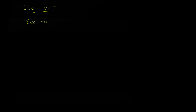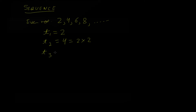We call such an ordered collection a sequence. For example, even numbers: 2, 4, 6, 8, and so on. We have a first term, second term, third term, fourth term, and so on. We can represent them as t1 = 2, second term = 2×2, third term = 2×3, and in general we can write tn = 2n. If we want the first term we replace n by 1 to get 2; for the second term we replace n by 2 to get 4.